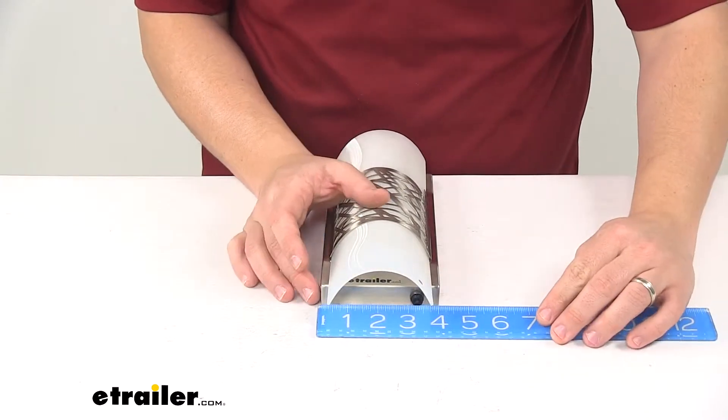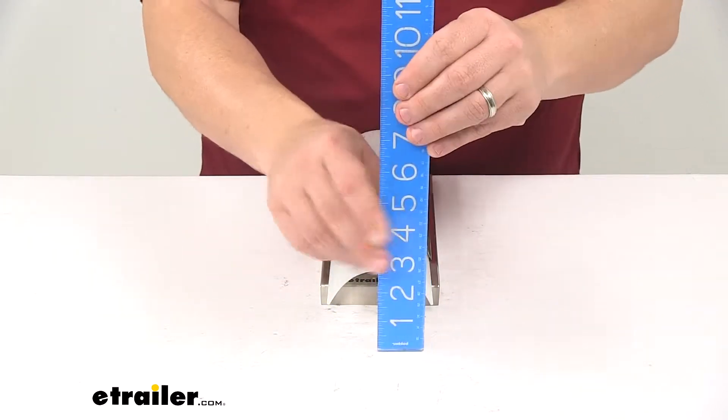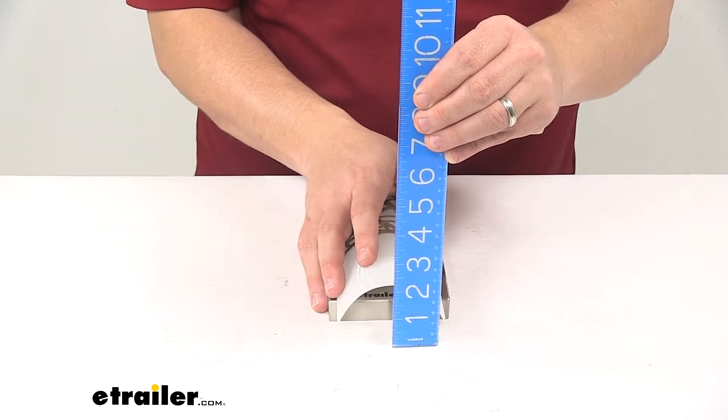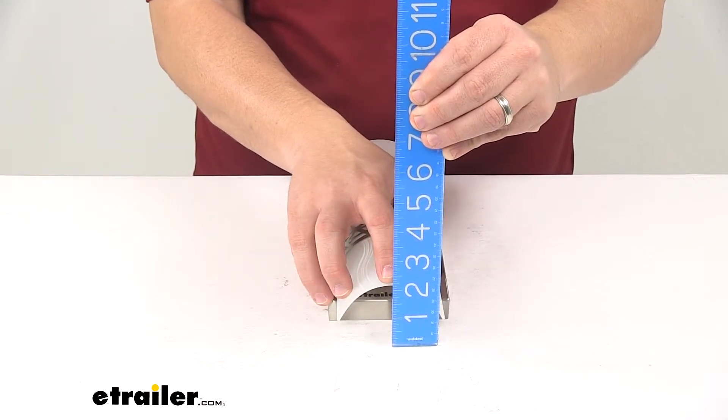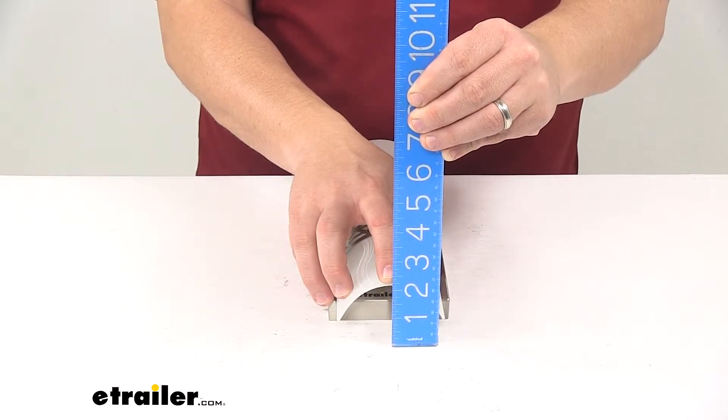Outside edge to outside edge here at the base is four inches. And then the overall depth, that's how far it sticks out from the wall, is going to be about two and one eighth to two and one quarter inches deep.